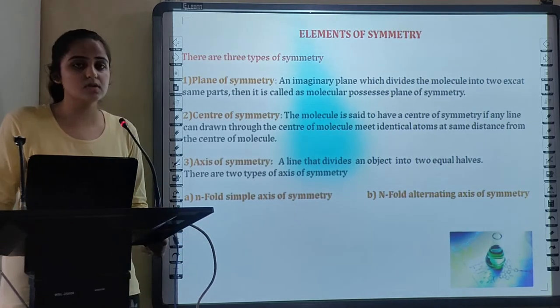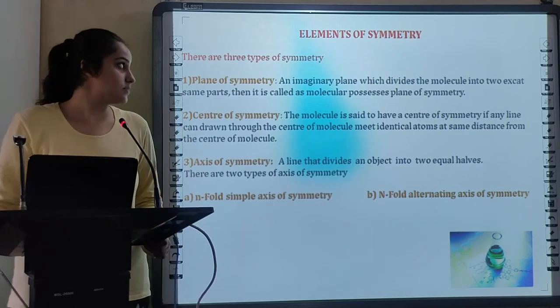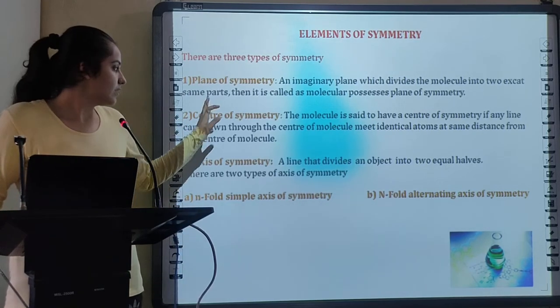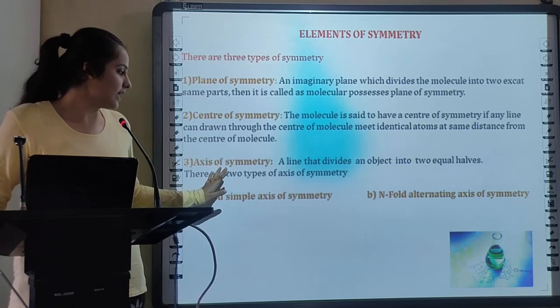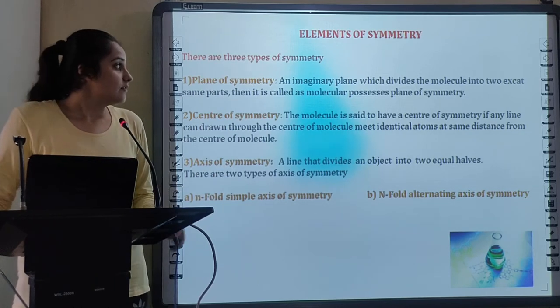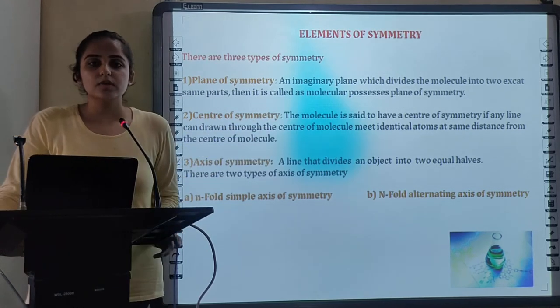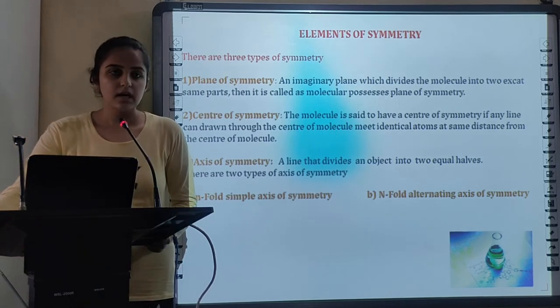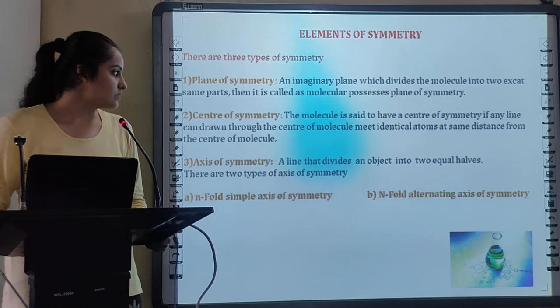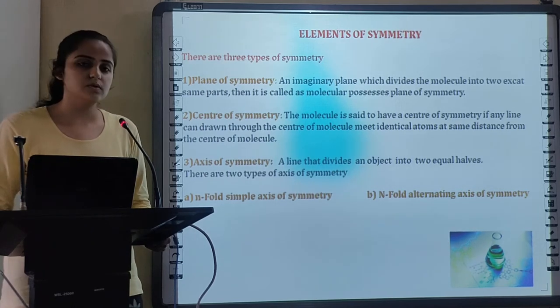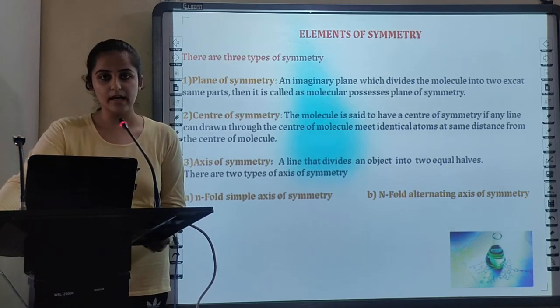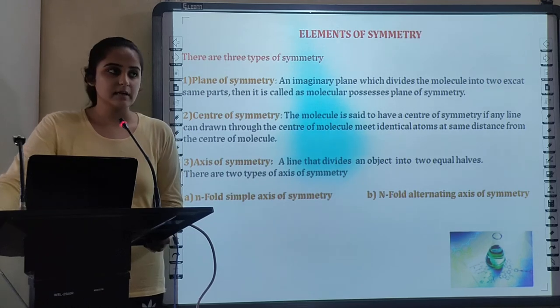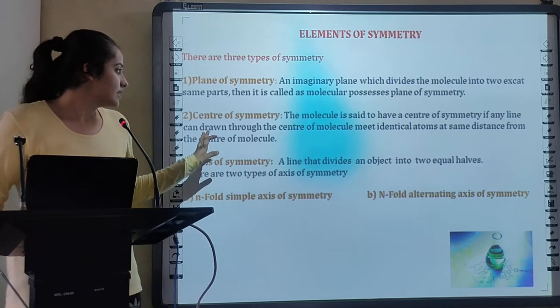Next I will focus on Elements of Symmetry. There are 3 main types of elements of symmetry: Plane of Symmetry, Center of Symmetry and Axis of Symmetry. If imaginary plane divides a molecule into 2 equal parts then the molecule possesses plane of symmetry and if an imaginary line passes through center of molecule which meets identical atom or molecule at same distance is said to be center of symmetry.